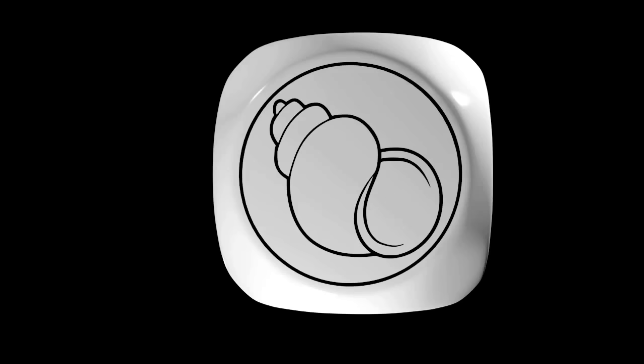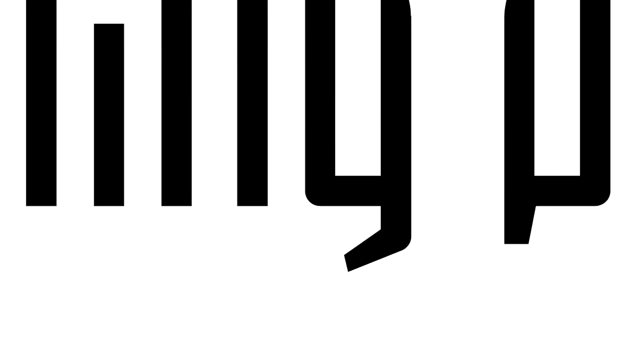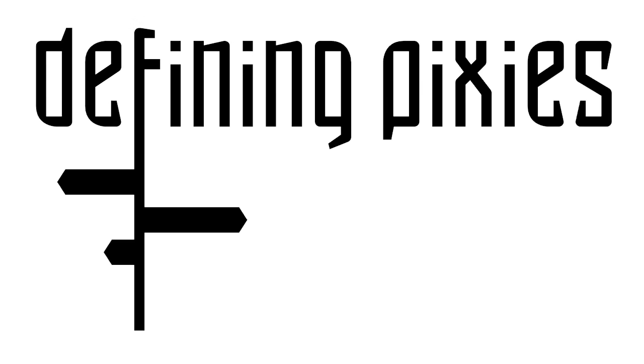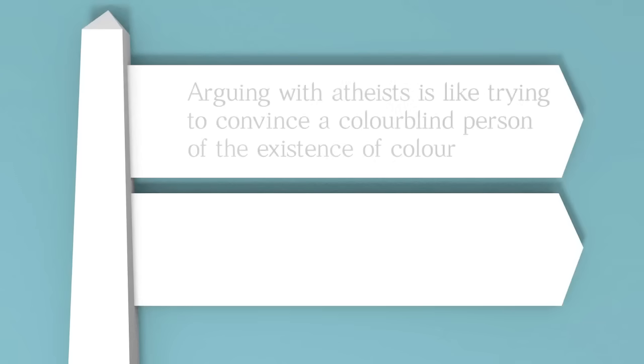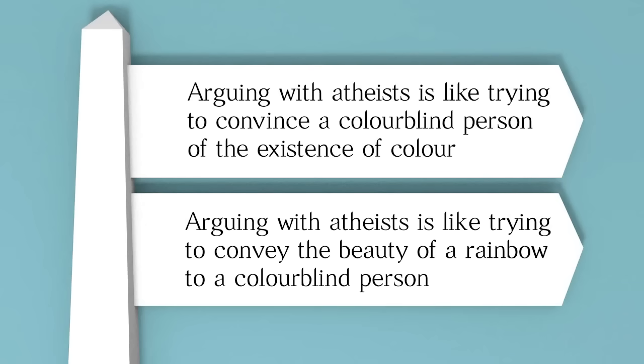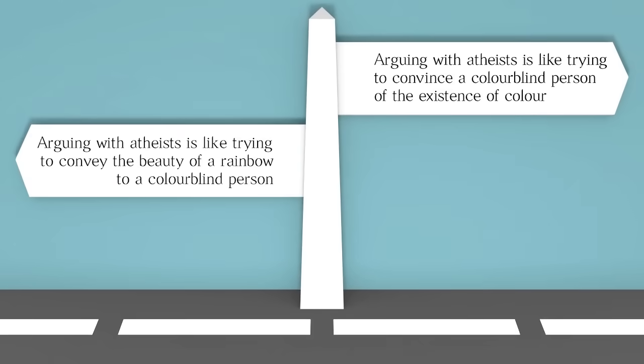Then I'd like to talk about a couple of experiments that lay bare just how easily we can be convinced we possess some special insight that other folks are missing. The comparison of atheism with color blindness comes in two primary forms. One asserts that arguing with atheists is like trying to convince a color blind person of the existence of color. Another variation asserts that arguing with atheists is like trying to convey the beauty of a rainbow to a color blind person. These are obviously two very different cruxes. So, let's see them through.